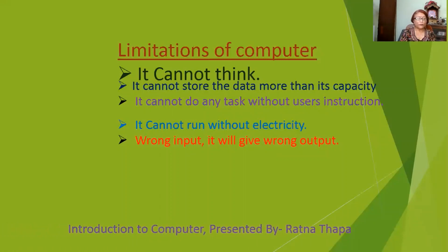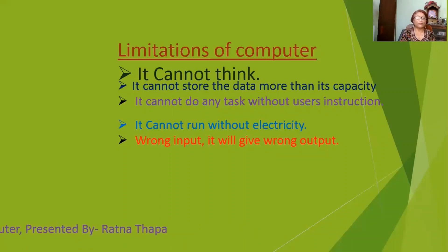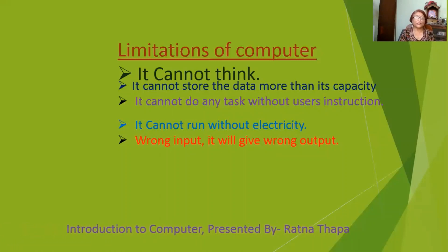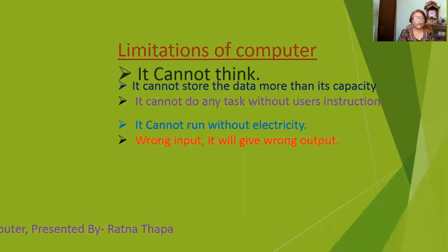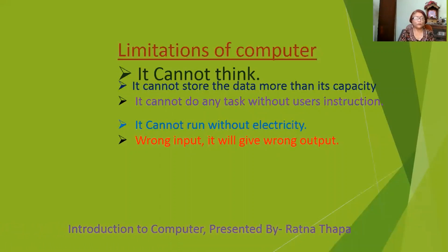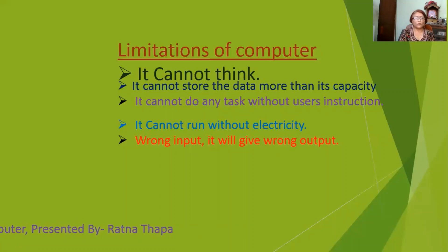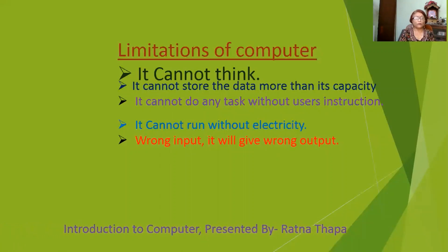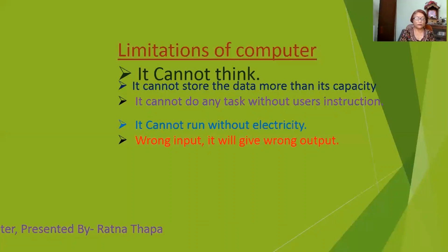I am going to tell you about GIGO. The full form of GIGO is Garbage In, Garbage Out. When we key in wrong input, we will get wrong output, and this type of output or value is called a garbage value.